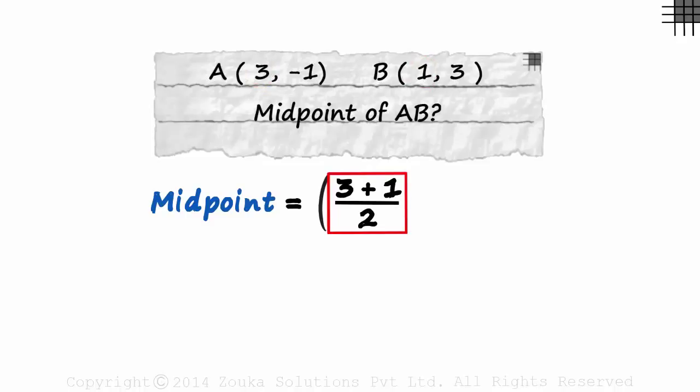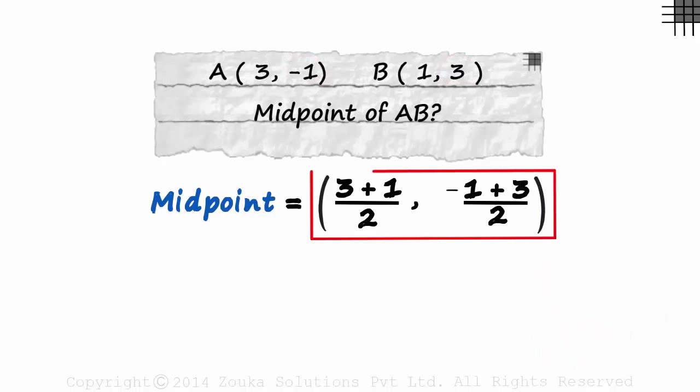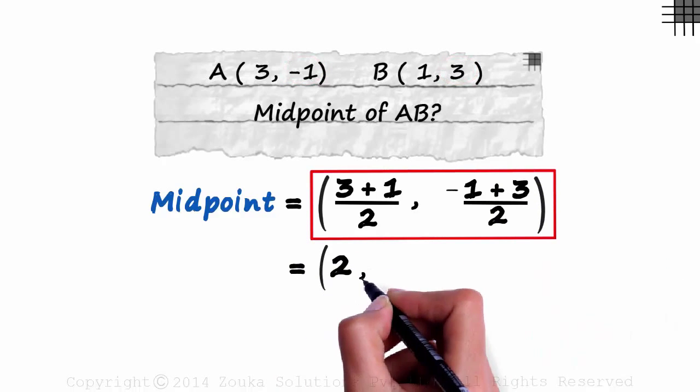And the y coordinate, as you would have guessed, will be the average of the y coordinates of the endpoints. It will be minus 1 plus 3 over 2. The coordinates of the midpoint are 2 comma 1.